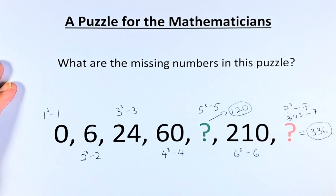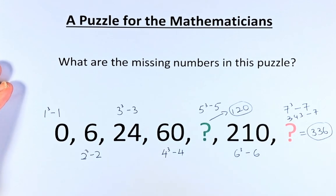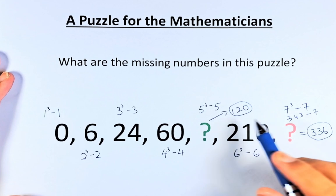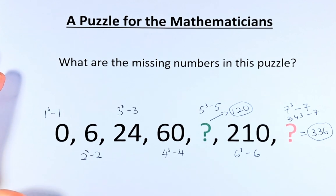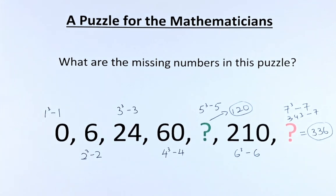The solution to the two question marks are: the first question mark, the green question mark is 120 and the red question mark is 336. Well done to all those who got it right because this is a difficult puzzle and I'll see you in the next one. Cheers everyone, have a good day.